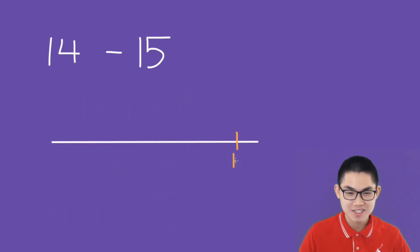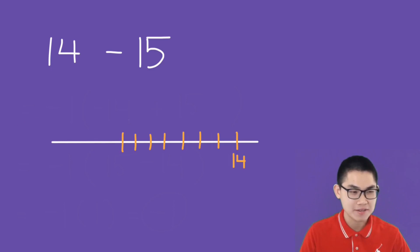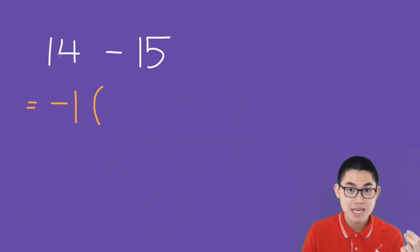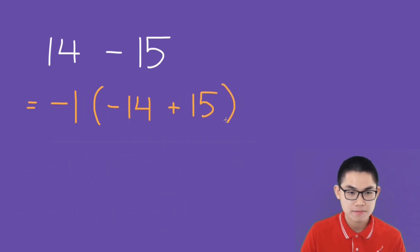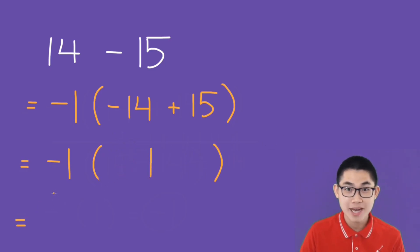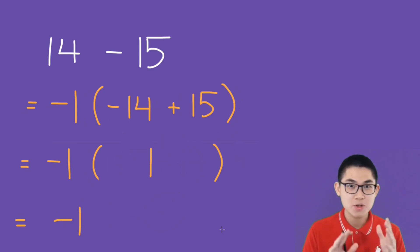How about 14 minus 15? Well, you can do the number line method, but let me show you a faster way. All you have to do is factor out negative 1. You just flip the sign, so positive 14 becomes negative 14 and negative 15 becomes positive 15. This is negative 1 times negative 14 plus 15, which is the same as 15 minus 14. And 15 minus 14 gives you 1, and negative 1 times 1 gives you negative 1. So those are two different ways — you can use whichever way you prefer.